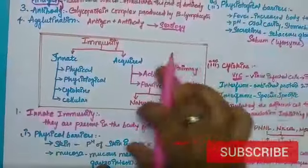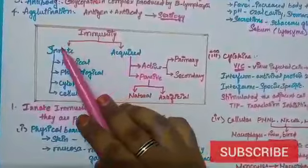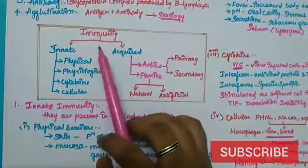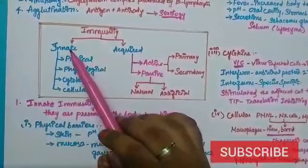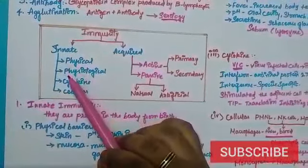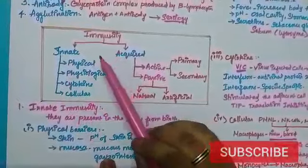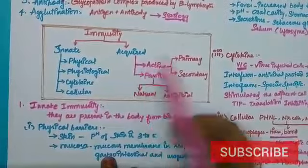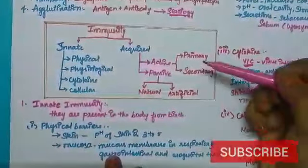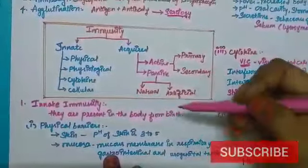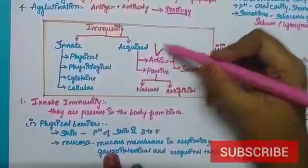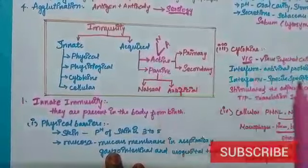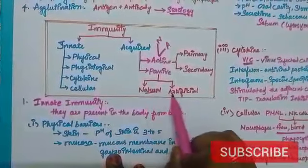Now let's look at the simple flow chart of immunity. Immunity can be primarily classified into two major types: innate immunity and acquired immunity. Innate can be further classified into physical, physiological, cytokine and cellular barriers. Acquired immunity can be classified into active and passive. Active immunity can be further classified into primary and secondary, and also into natural and artificial. Passive immunity can be classified into natural and artificial.